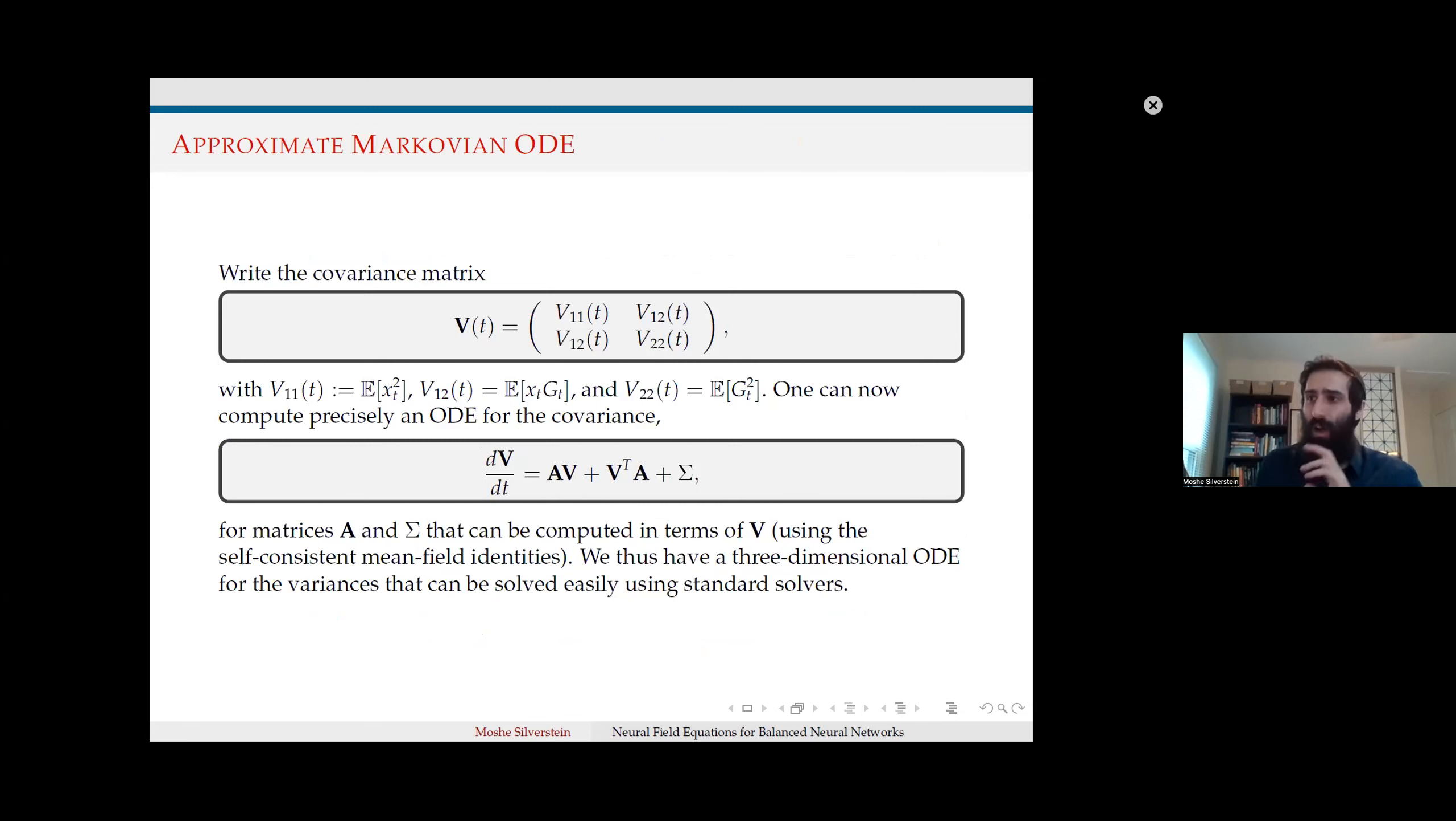This approximation allowed us to write the variance of the system. Since the system is ultimately a centered Gaussian of mean zero, all dynamics are captured by the variance. This allowed us to write the variance as a simple covariance matrix and define it as basically a simple system of ODEs that can be solved fairly straightforwardly using classical techniques.